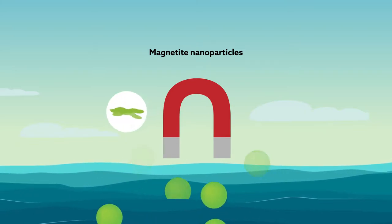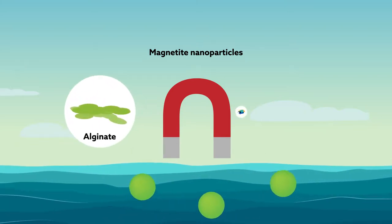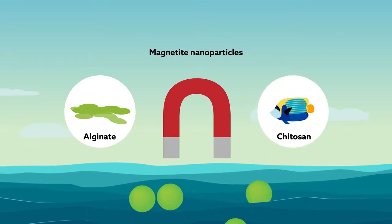The matrix consists of materials like alginate, which is derived from algae, and chitosan, which is a waste product of fish.